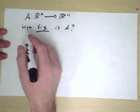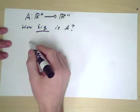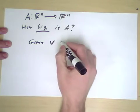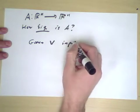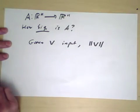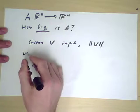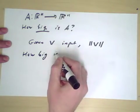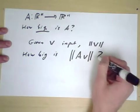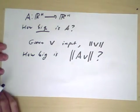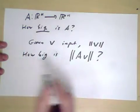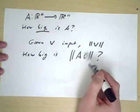So for example, we can ask the question: given a vector v as input with some size, length of v, how big is the output A v? In other words, if we have an input of a certain size and we examine its output, what's the relative size of those two things?